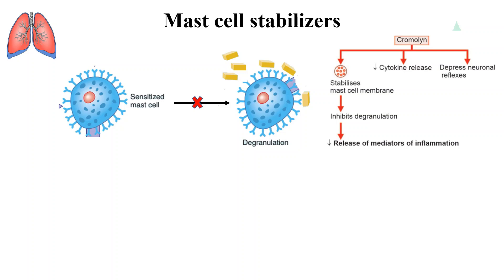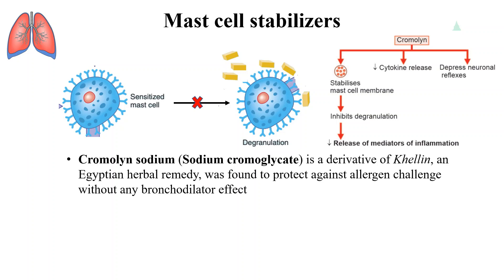Cromolyn sodium and other drugs in this category stabilize the mast cell membrane, inhibit its degranulation, and decrease the release of inflammatory mediators from the respiratory tract. Apart from this, they also reduce cytokine release and depress the neuronal reflexes of asthma.